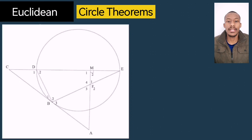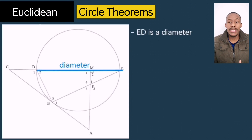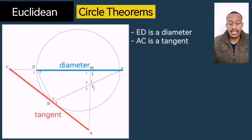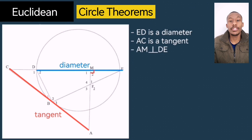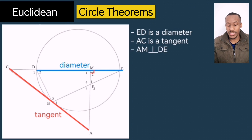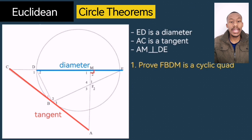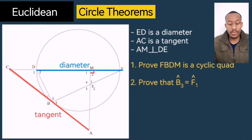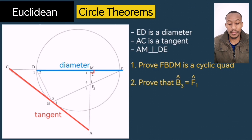Moving on to the third example. Let's study the sketch first. ED is a diameter to the circle. AC is a tangent to the circle. AM is perpendicular to DE. The two questions are: prove FBDM is a cyclic quad, and prove that angle B3 equals angle F1.